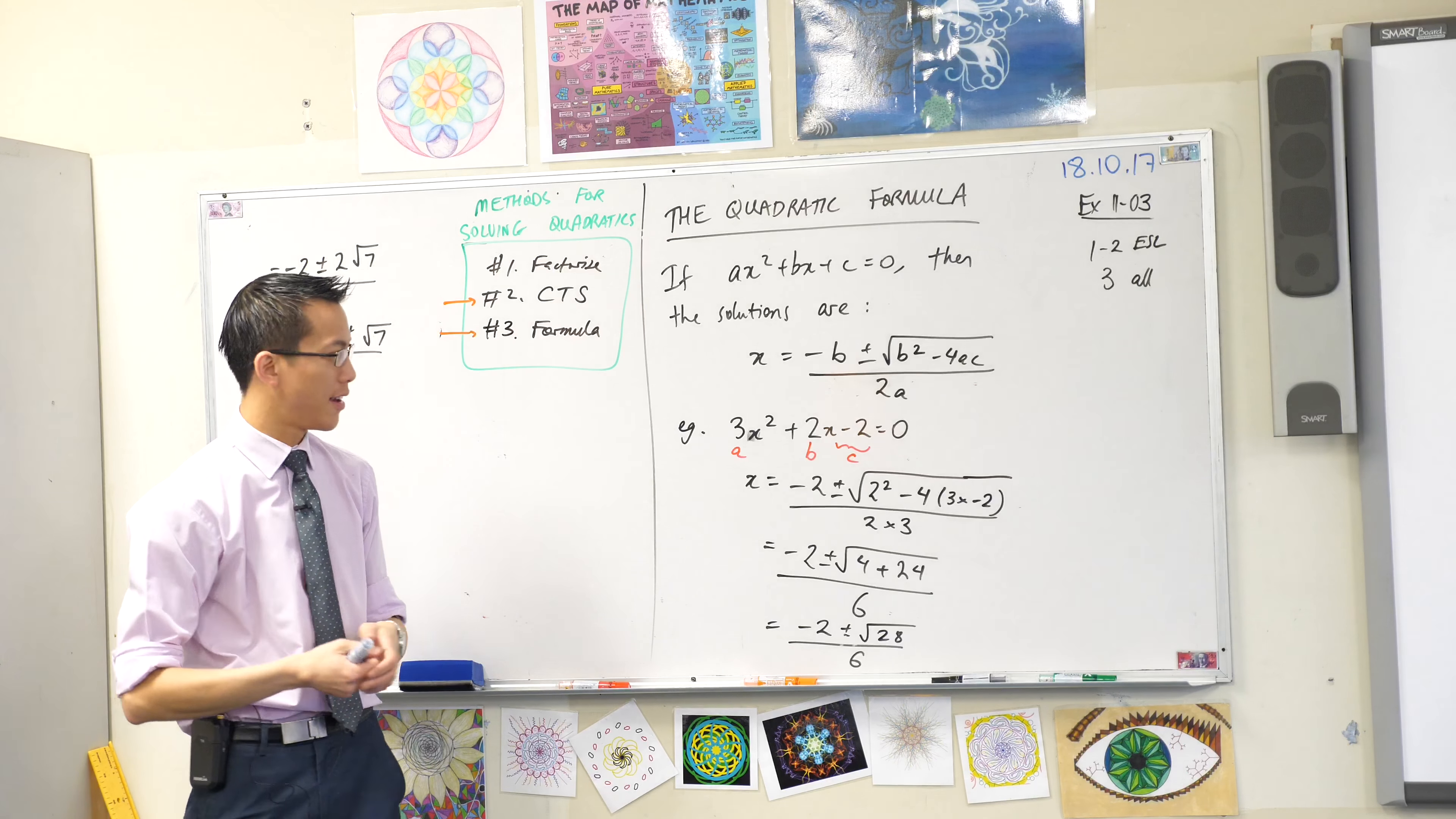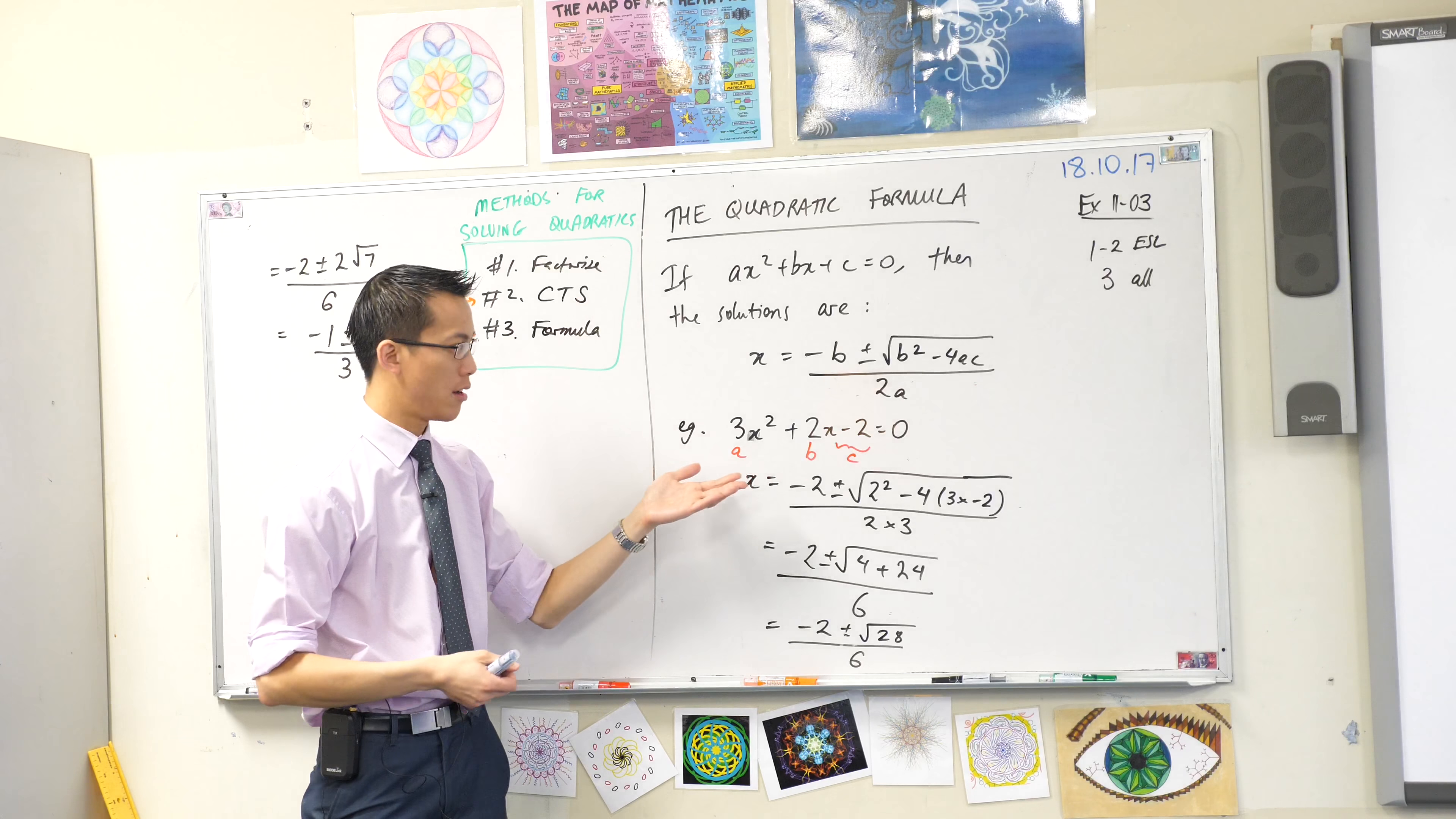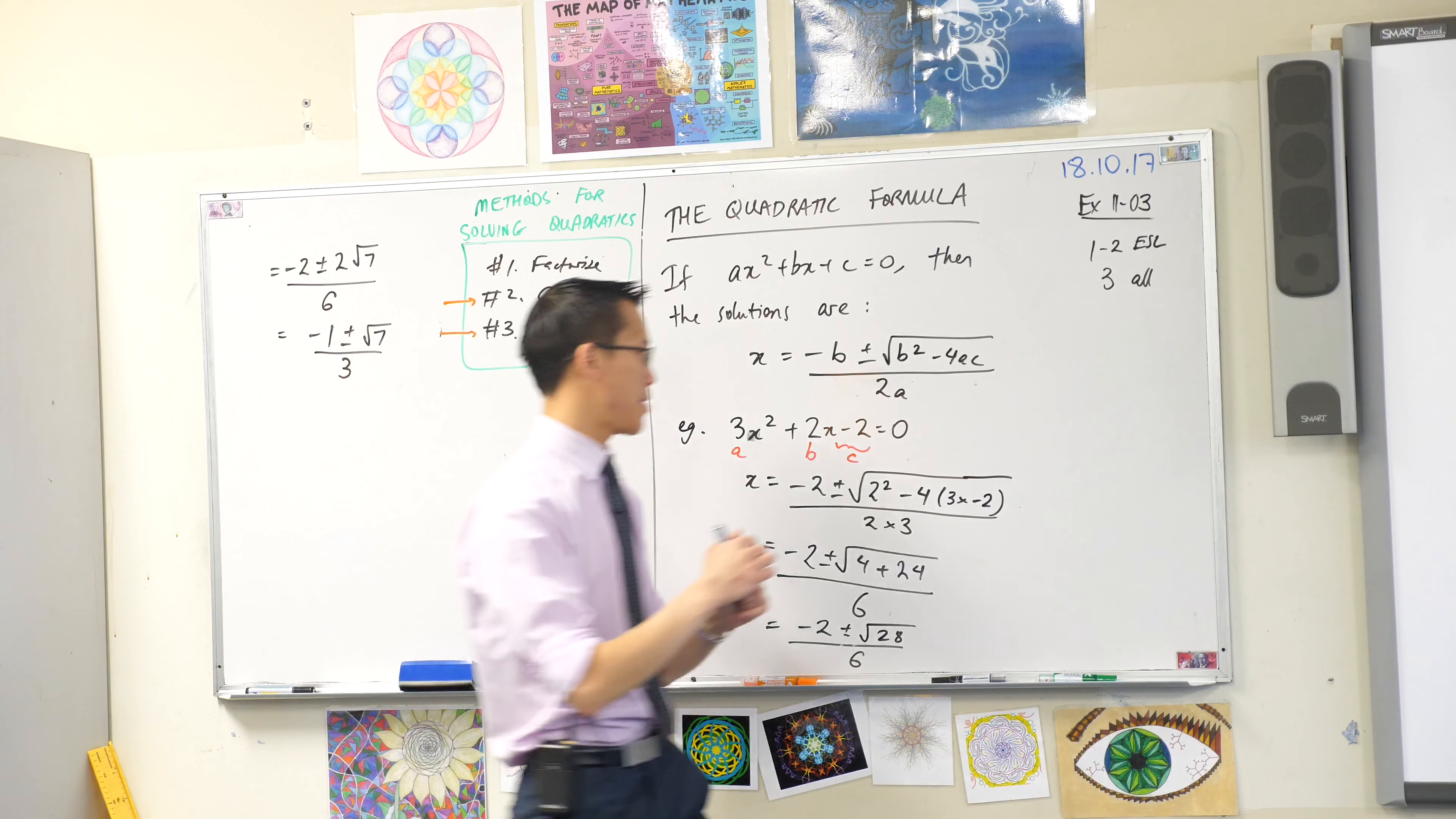A common mistake students make is that when they see something like this, if it isn't in the right order, they get a, b, and c wrong. Let me show you what I mean.